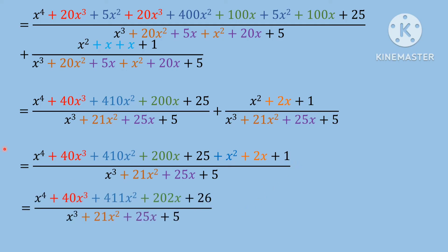Now we know h to the power 4 plus 40x² plus 410x squared, plus 411x squared plus 200x plus 2h plus 202x plus 25 plus 1 = plus 26. This gives h² plus 21x squared plus 21x squared plus 25x plus 25x plus 5.